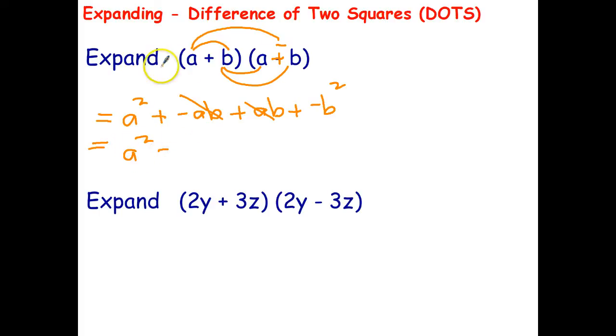So it turns out that expression there can be written as or simplifies to a squared minus b squared and that's why it's called the difference of two squares because we've got the square of the first term minus which is a difference the square of the second term and that's what I used in the previous video. It was a was 12, b was 1, the answer was 12 squared minus 1 squared or 143.